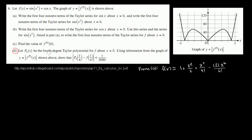Let P sub 4 of x be the fourth degree Taylor polynomial for f about x equals 0. Using information from the graph of y equals the absolute value of the fifth derivative of f of x shown above, show that the absolute value of the difference between the fourth degree polynomial evaluated at 1/4 and the function evaluated at 1/4 is less than 1 over 3,000.